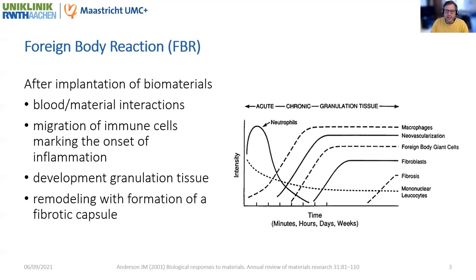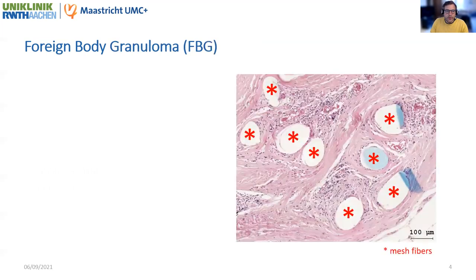This reaction is divided chronologically into two phases: the acute foreign body reaction and the chronic foreign body reaction, with the development of granulation tissue and tissue remodeling. In terms of mesh implants and suture material, the foreign body reaction culminates in the formation of a foreign body granuloma.